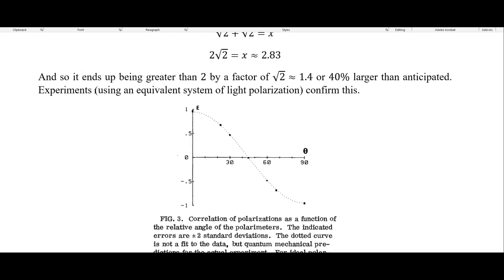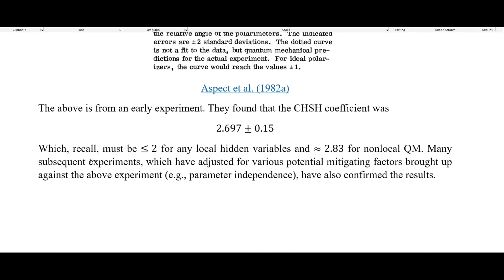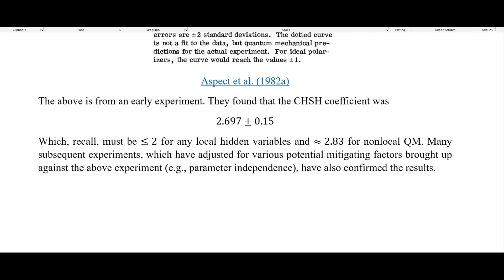And it turns out that experiments using an equivalent light polarization system confirm this. This is from an early experiment here where they found that the quantum mechanical prediction is actually the correct one. And so it says here that this is the correlation of the polarizations of the light. And what they say is the dotted curve here is not a fit to the data, but quantum mechanical predictions for the actual experiment. And so these older dots here are their actual data. And then this thin dotted line is what the quantum mechanical predictions would be. And what they see is that their experimental data falls right onto this line that is predicted for quantum mechanics.